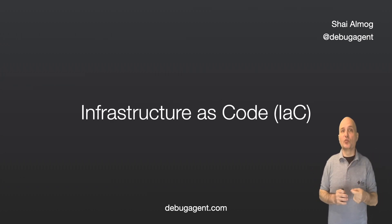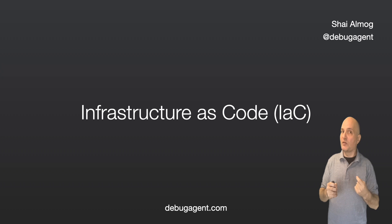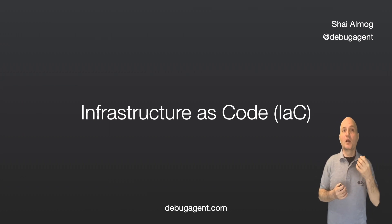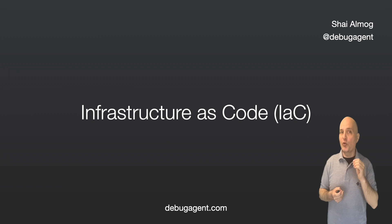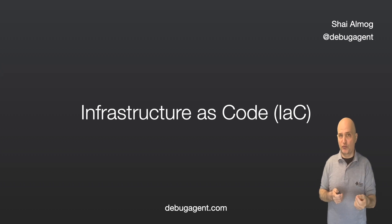Infrastructure as code tools let us manage our infrastructure as if it was source code. This makes it easier to automate the provisioning, configuration, and deployment of infrastructure. Popular IaC tools include Terraform, CloudFormation, and Ansible. I also like Pulumi, which lets you use regular programming languages to describe the infrastructure, including Java.